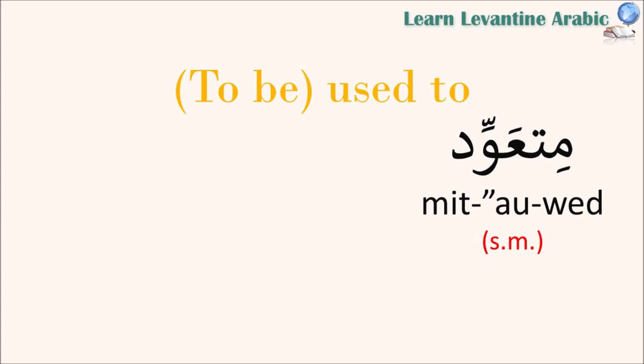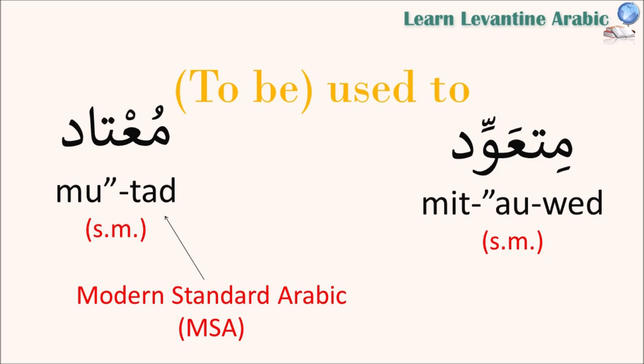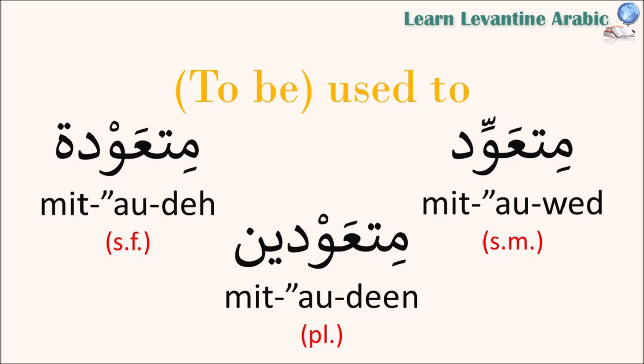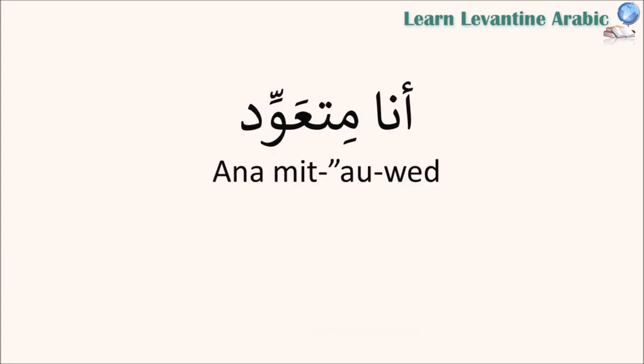To be used to in Levantine Arabic is 'متعود'. Compare this to the MSA word 'مُعتاد' (Mu'tad). 'متعود' is for the singular masculine, 'متعودة' is for the singular feminine, and 'متعودين' is for the plural. Pay attention to the pronunciation — you stress that sound in the singular masculine. In the singular feminine the stress is a little bit less.